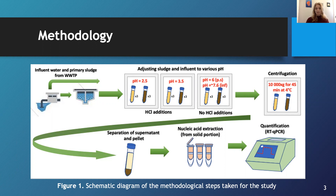The protocol consisted of three replicates for three pH levels: 2.5, 3.5, and an unmodified reference pH, which was 6 for sludge and 7.6 for influent. For the pH modifications, a solution of hydrochloric acid was added to samples until the desired pH levels were reached. The samples were then centrifuged, the liquid portion or supernatant was discarded, and the solid portion or pellet was kept for RNA extraction.